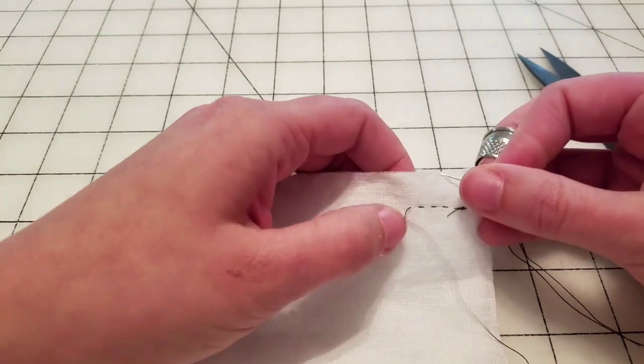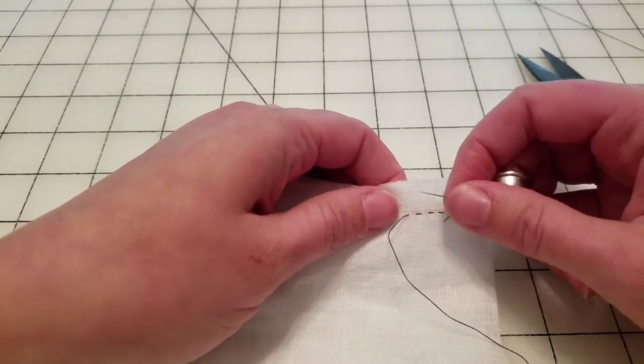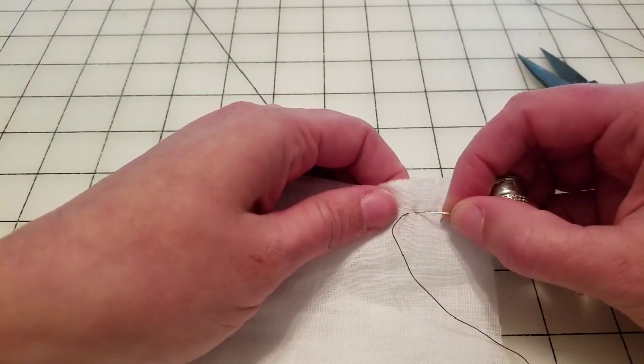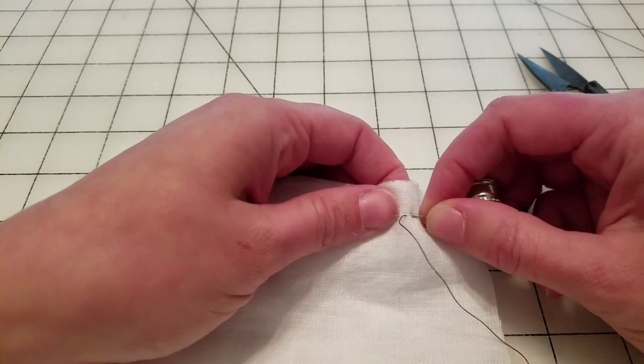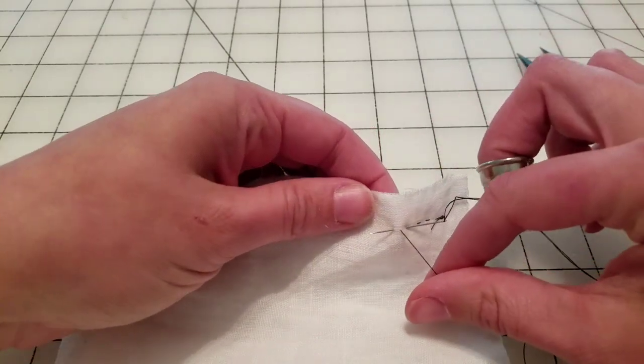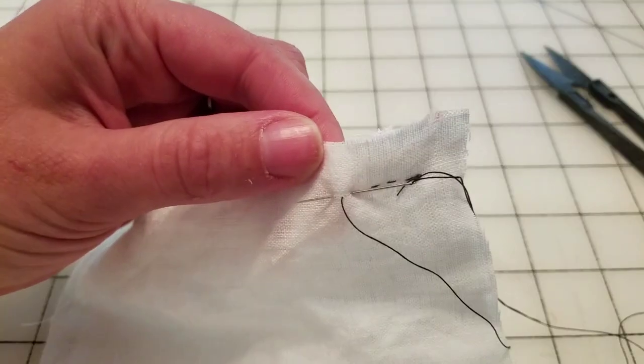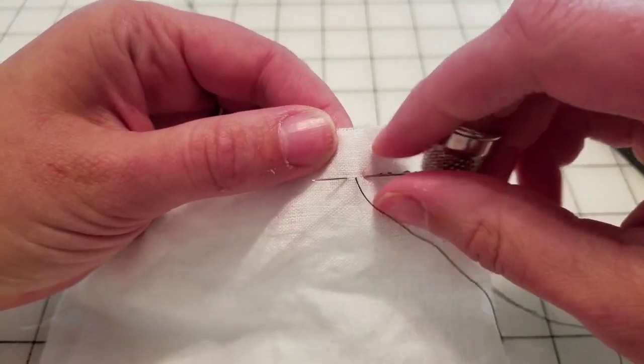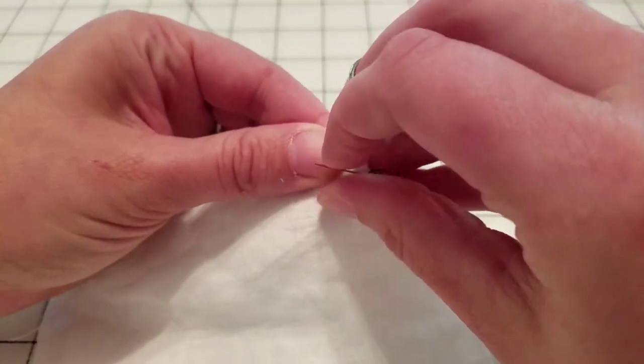Now for backstitch, we're going to go back in where we came out on the previous stitch and come through, come out a little on the other side of our needle. Can you see that? There we go. We're going to keep doing that.